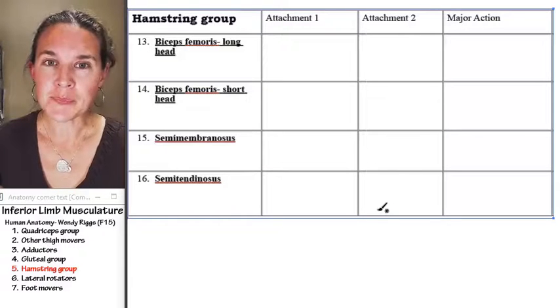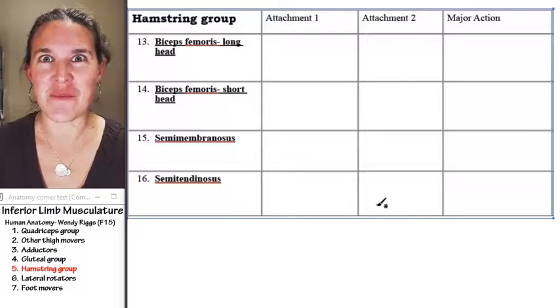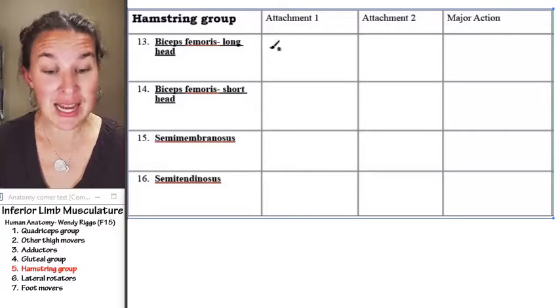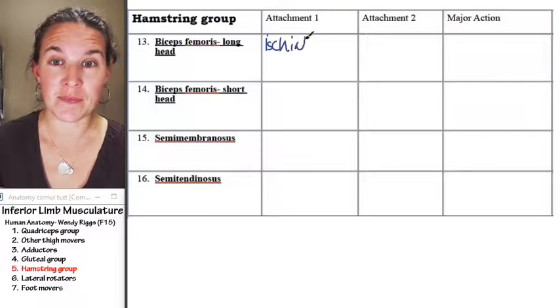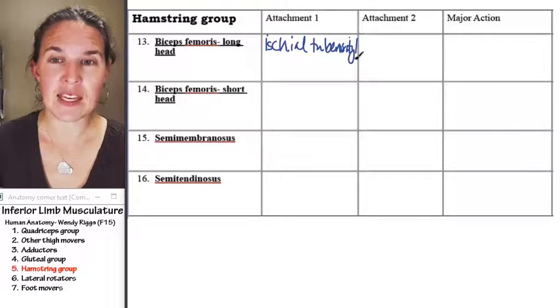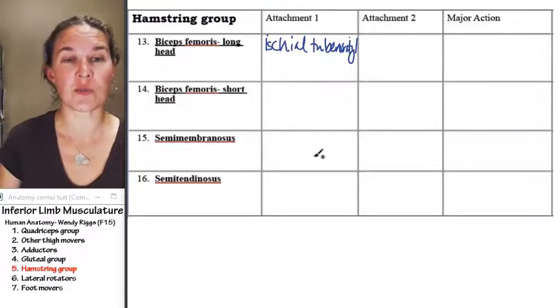First of all, almost all of them, 75% of them attach to the ischial tuberosity. And the ischial tuberosity, remember, is the bone you sit on.